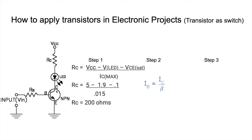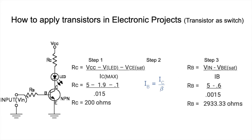IB is calculated as: IB = IC / β (beta). Beta is a value obtained from the transistor's datasheet, typically ranging from 10 to 100. We will take beta as 10. So IB = 0.015 / 10 = 0.0015 A.